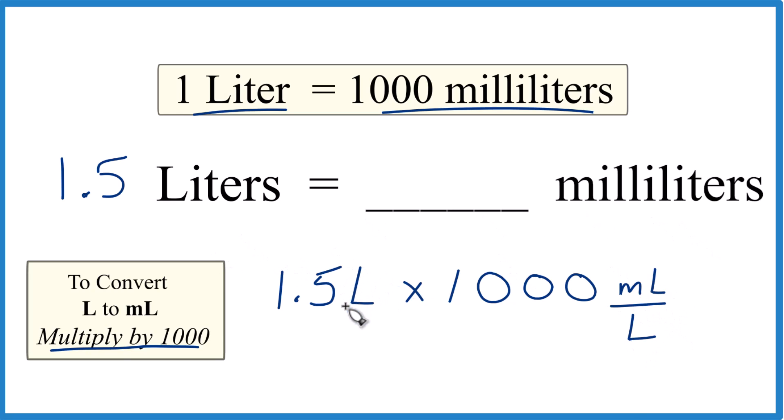So now when we multiply, liters on top and bottom cancel out, we're left with milliliters. We know we did it right.